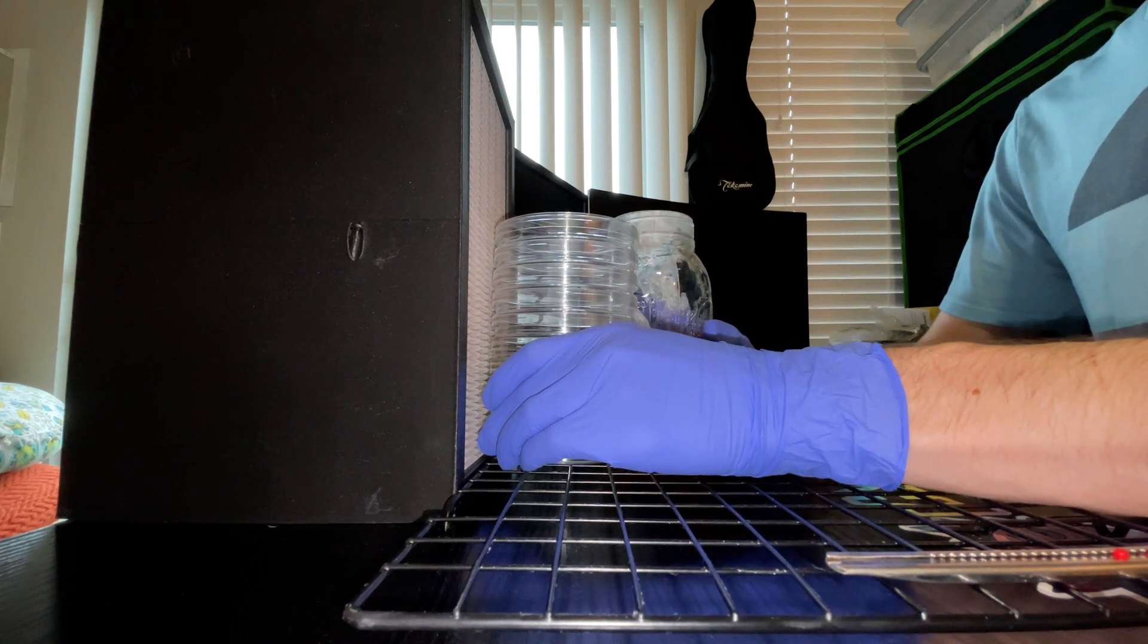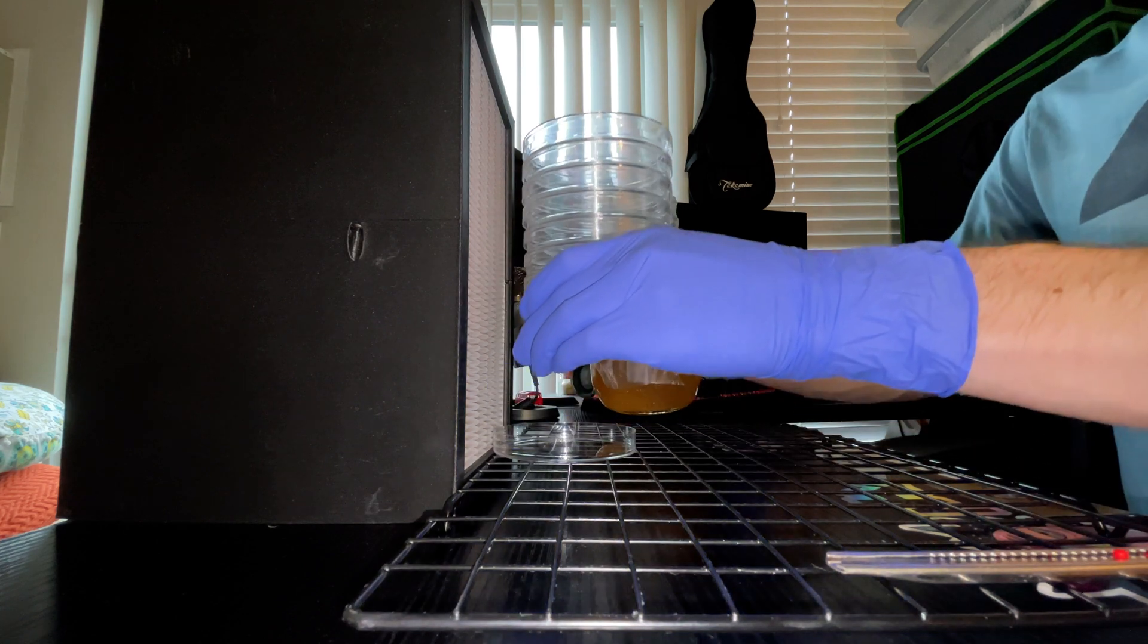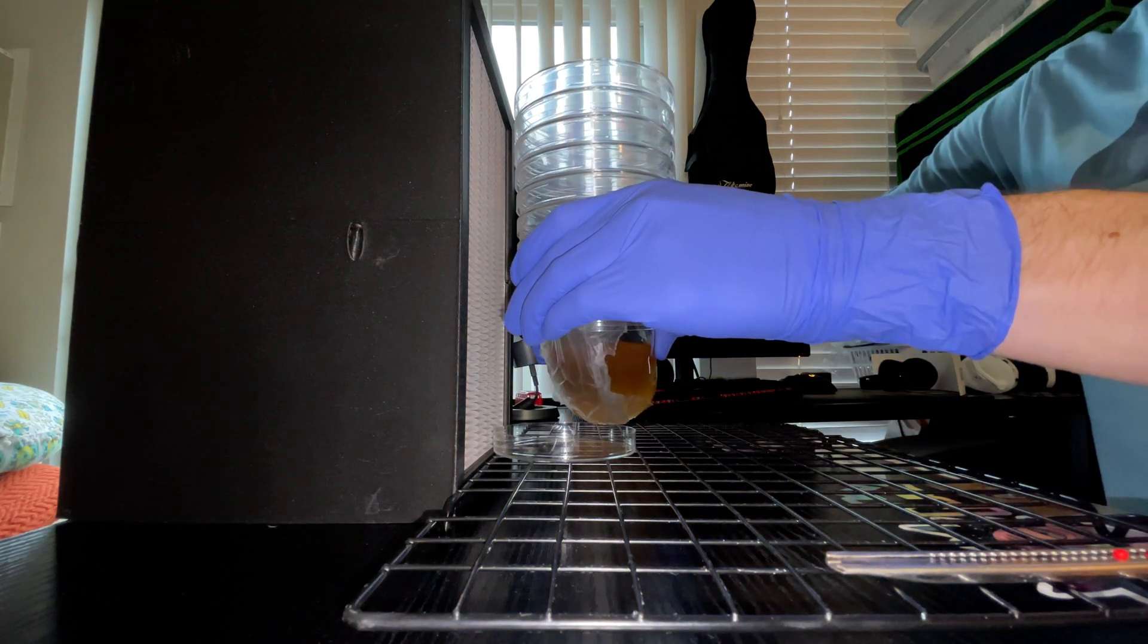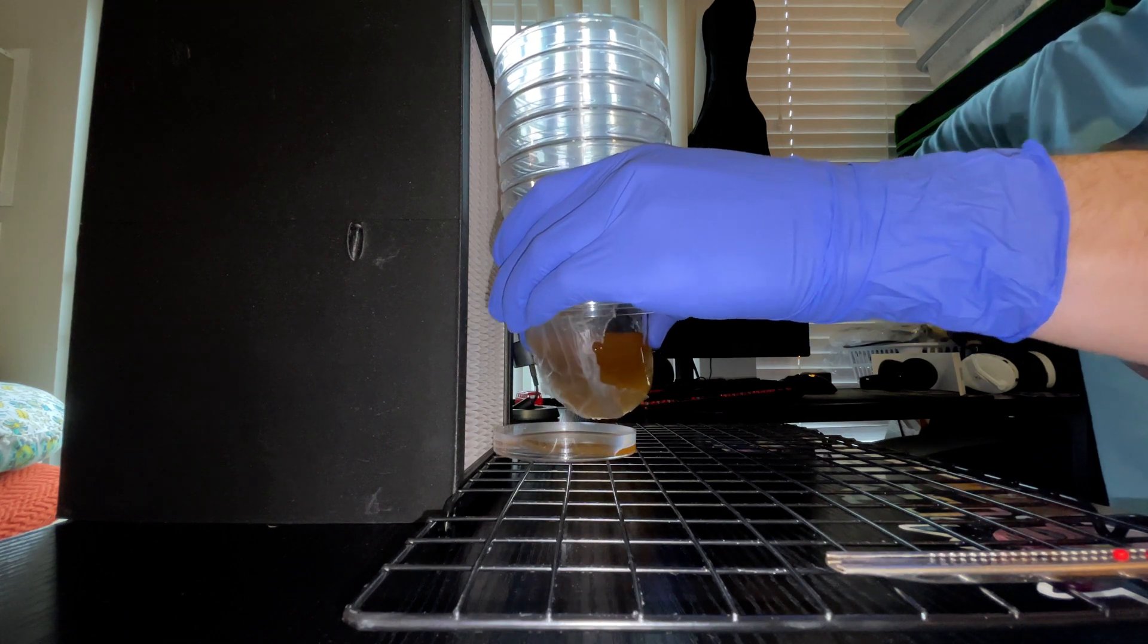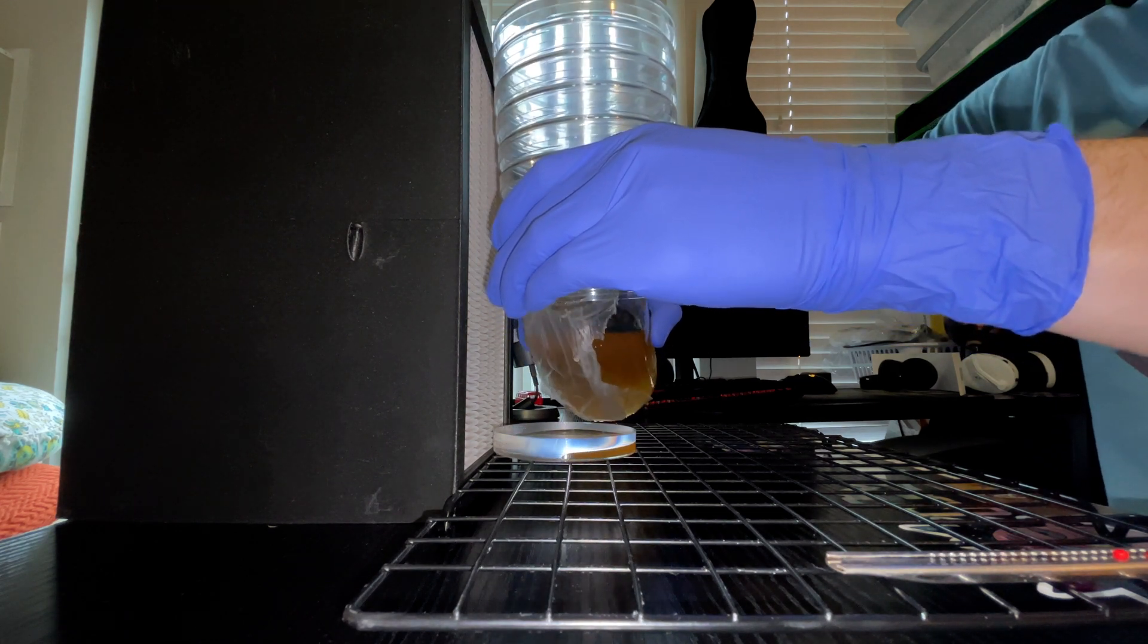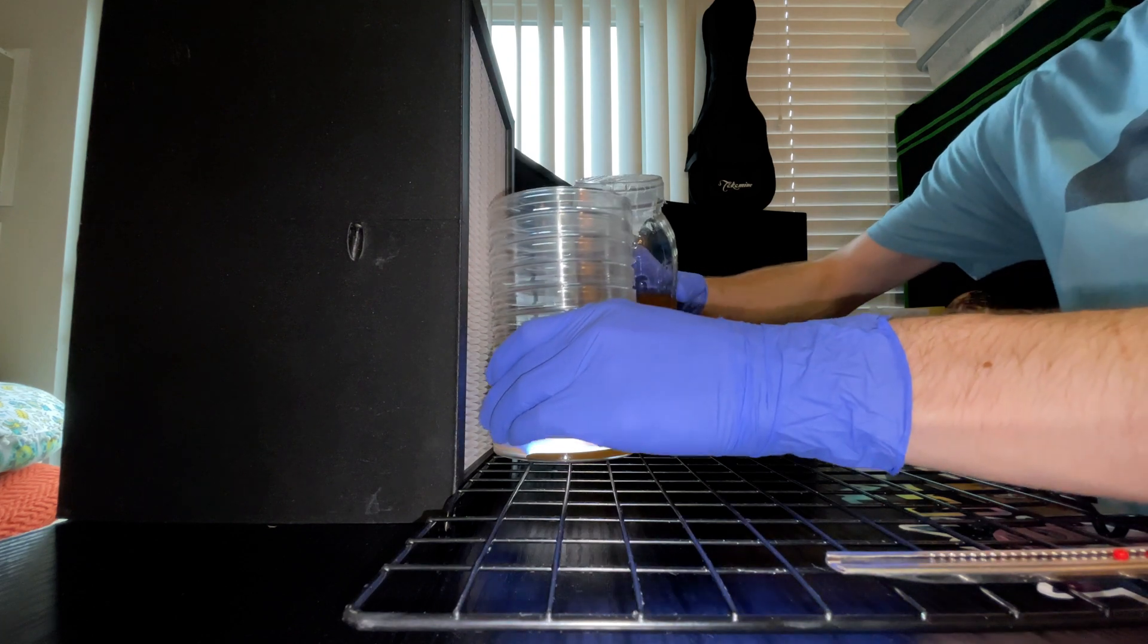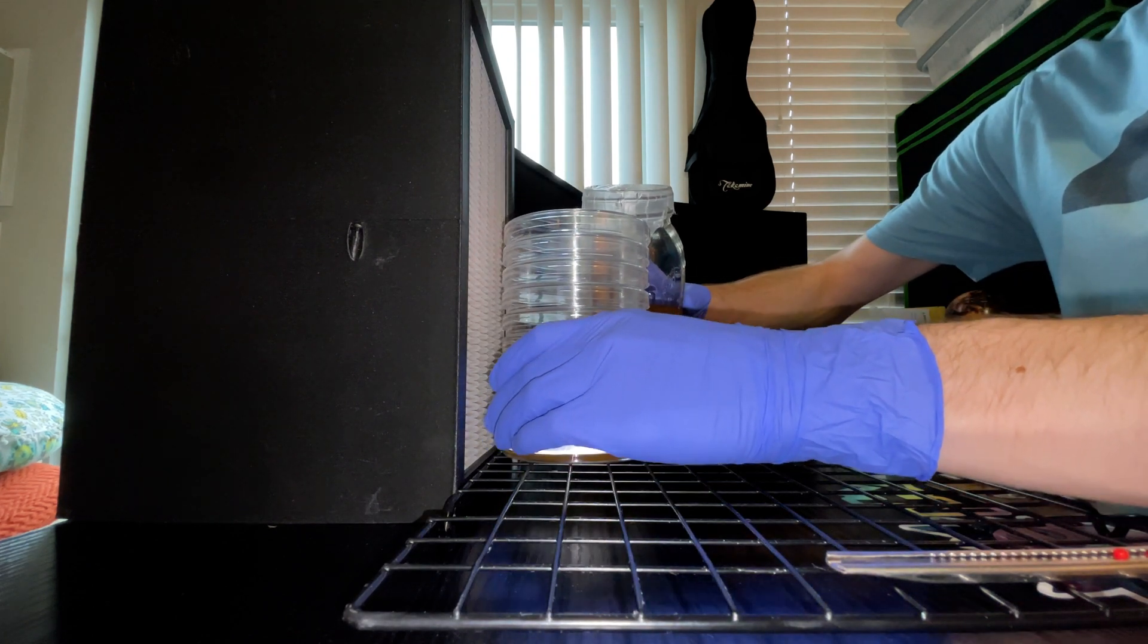Now, the idea behind a flow hood, just in case you didn't know, is that it pushes filtered air through each part of the filter in equal proportion. This creates a laminar flow, which provides a much more sterile air environment as opposed to just using a SAB.